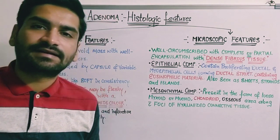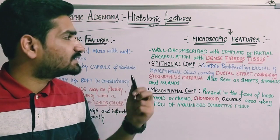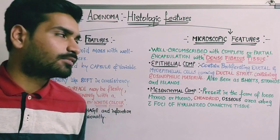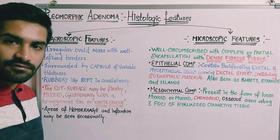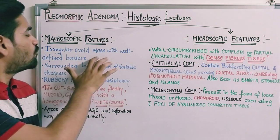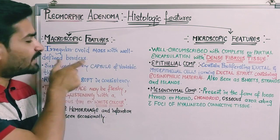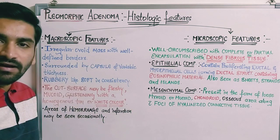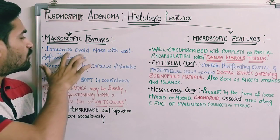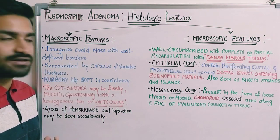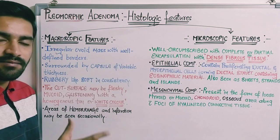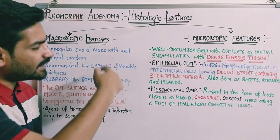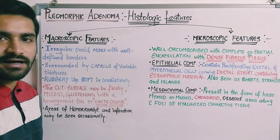Next, discussing the macroscopic and microscopic features of pleomorphic adenoma. Starting with the macroscopic features: the tumor appears as an irregular ovoid mass with well-circumscribed or well-defined borders. It will not have a proper regular shape, but mostly presents as an ovoid mass with well-defined borders.